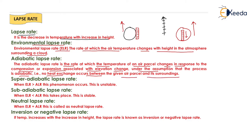Depending on the environmental lapse rate and adiabatic lapse rate, we have three types of conditions: super adiabatic lapse rate, sub adiabatic lapse rate, and neutral lapse rate. When the decrease in temperature of the outside environment is greater than the decrease in temperature inside the air balloon — that is, when ELR is greater than the adiabatic lapse rate — that phenomenon is known as super adiabatic lapse rate, and it is an unstable state.